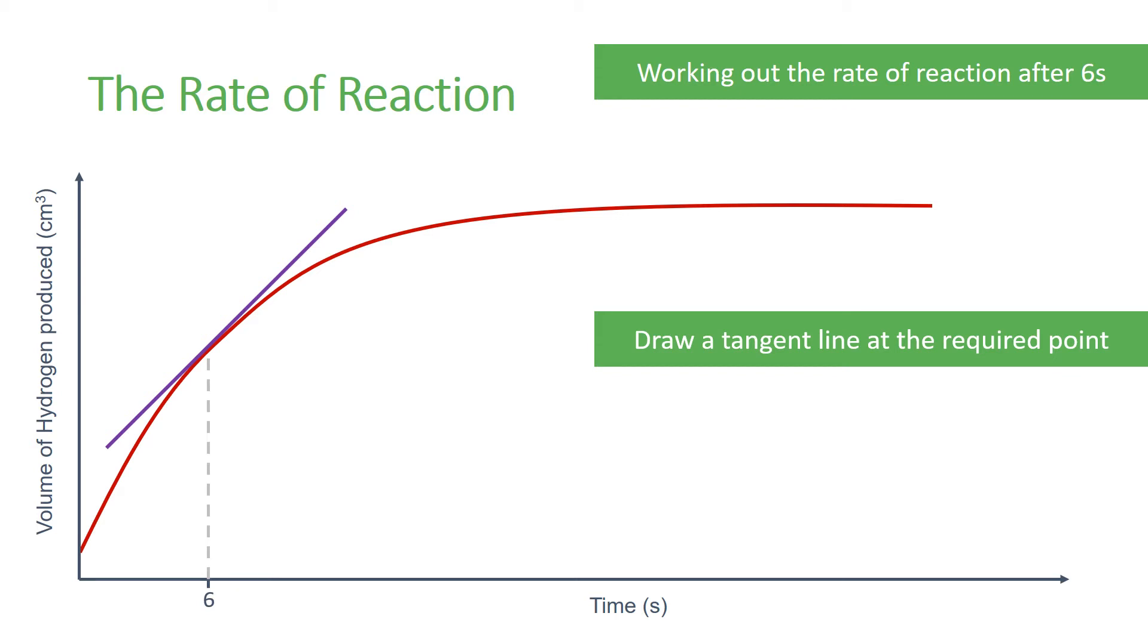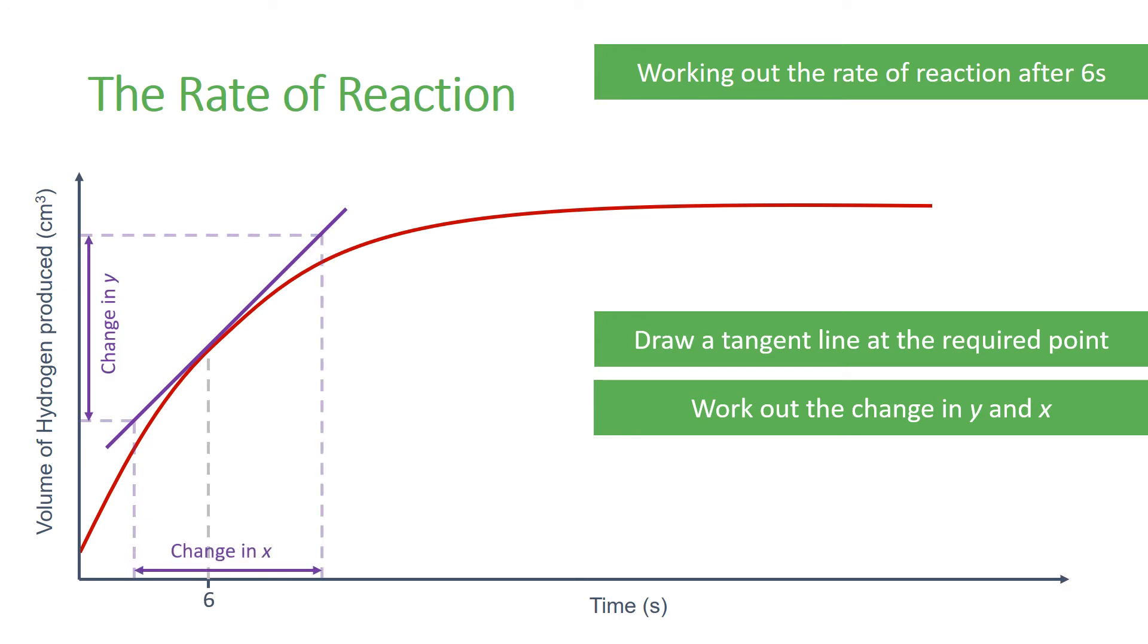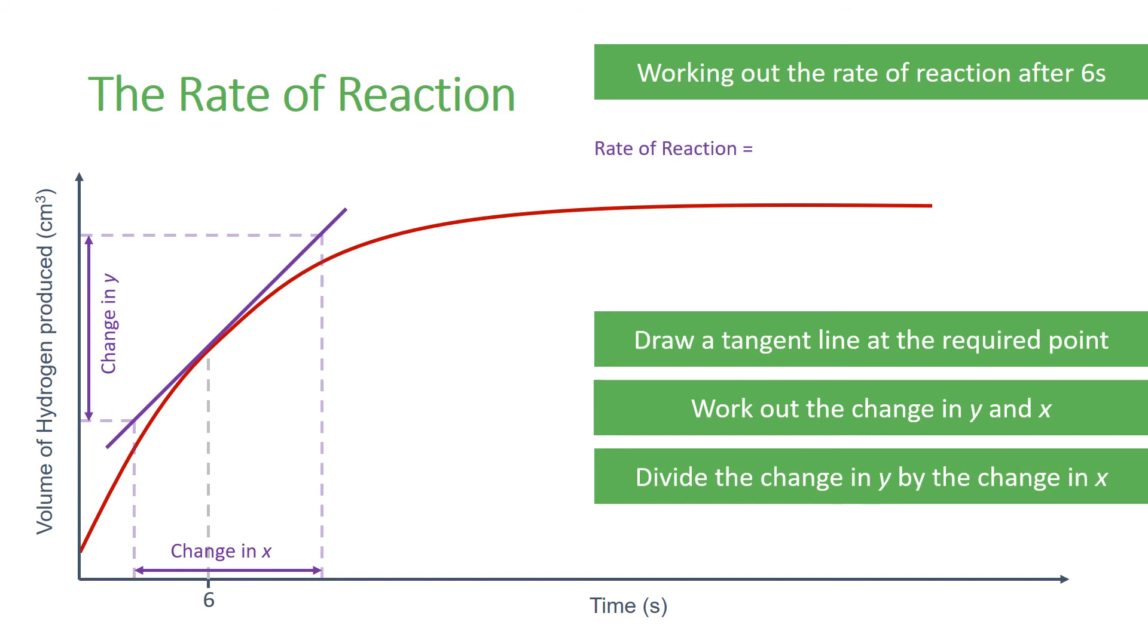You can then use the straight line formed by the tangent to work out the change in y and the change in the x-axis. Dividing the change in y by the change in x will give you the rate of reaction at the desired point.